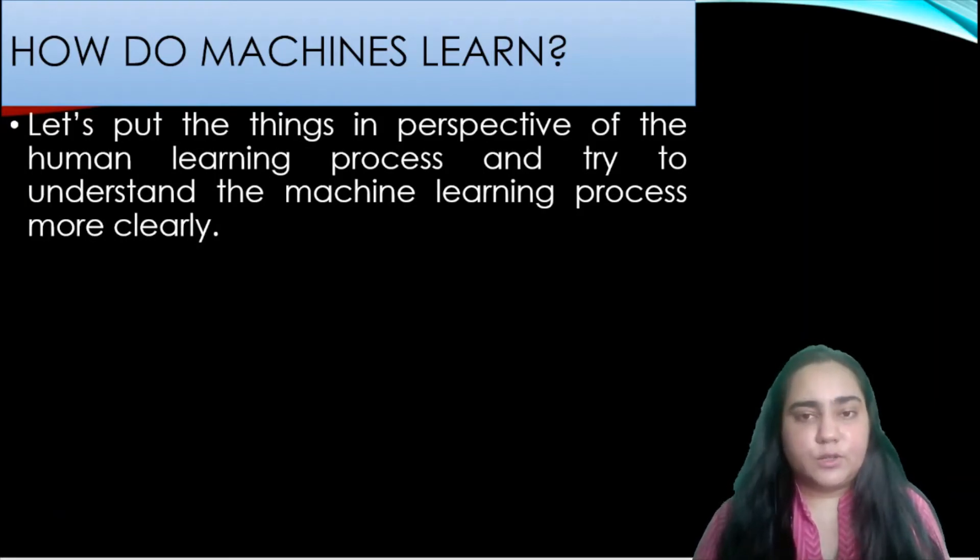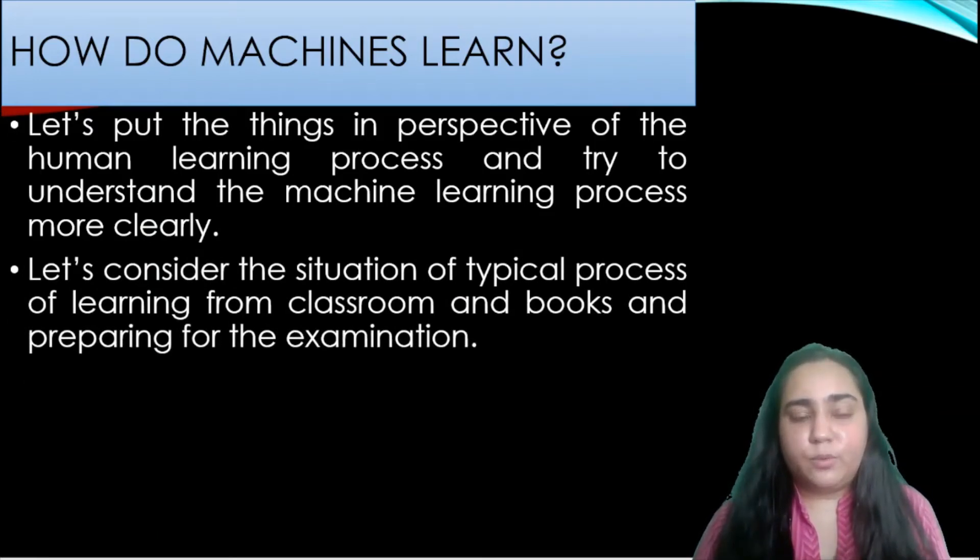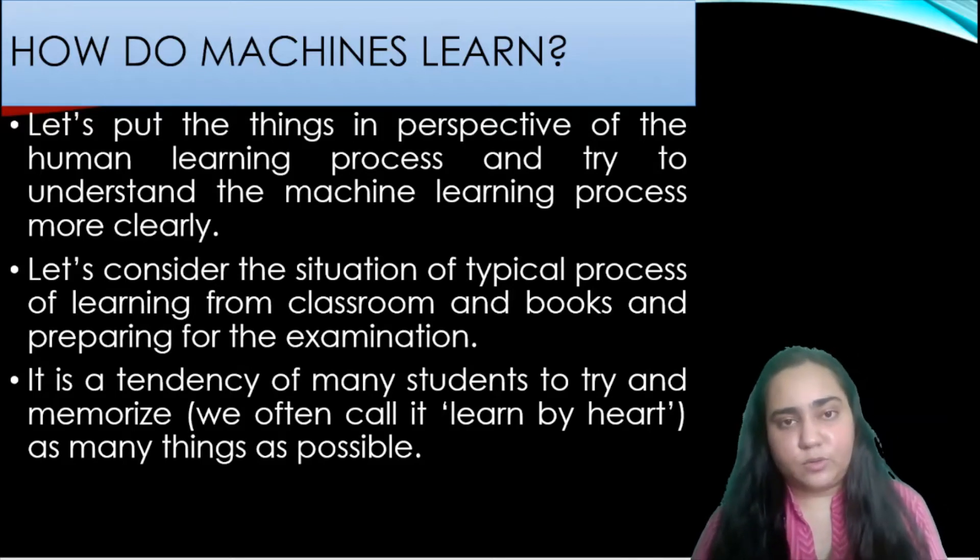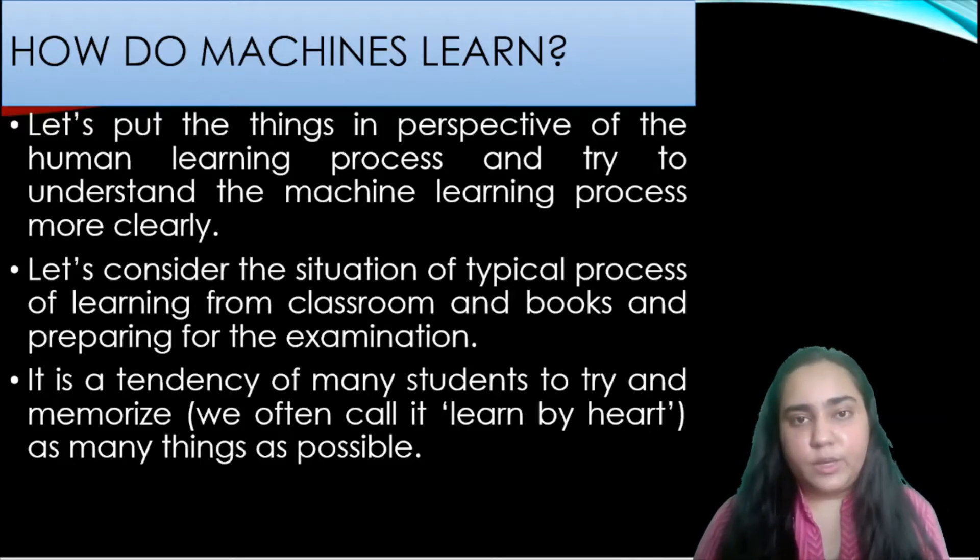Let's put all these things into perspective of the human learning process and try to understand the machine learning process more clearly. So we are trying to draw an analogy between human learning and machine learning. Let's consider the situation of a typical process of learning from classroom and books and preparing for the examination. It is a tendency of many students to try and memorize, which is often called learn by heart, as many things as possible. And oftentimes we can't help it. For example when you were in school and you were taught multiplication it is compulsory to memorize multiplication tables from one to ten. Sometimes you have to memorize a lot of things.